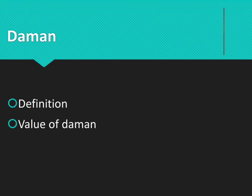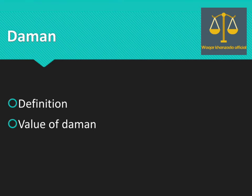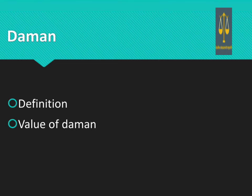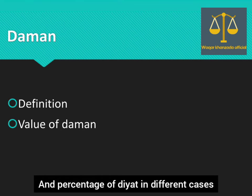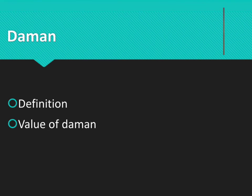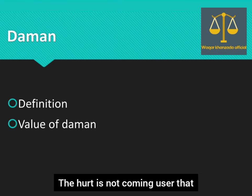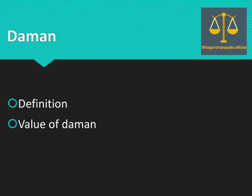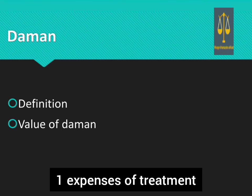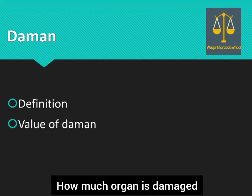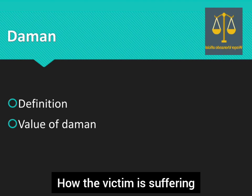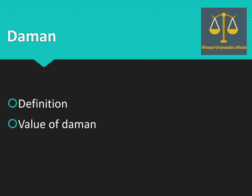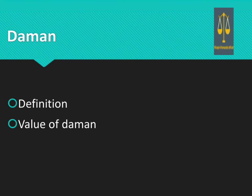The next kind of punishment is Daman. Under Article 299-D, Daman means the compensation determined by the court to be paid by the offender to the victim for causing hurt not liable to Arsh. اگر جو hurt کیا گیا ہے وہ Arsh میں بیان کردہ hurts میں نہیں آتا تو court خود determine کرے گی۔ Court دیکھے گی کہ treatment پہ کتنا خرچ آیا، اس organ کو کتنا نقصان پہنچا، اور victim کو کتنی تکلیف ہوئی — ان چیزوں کی بنیاد پر value of Daman finalized کی جائے گی۔